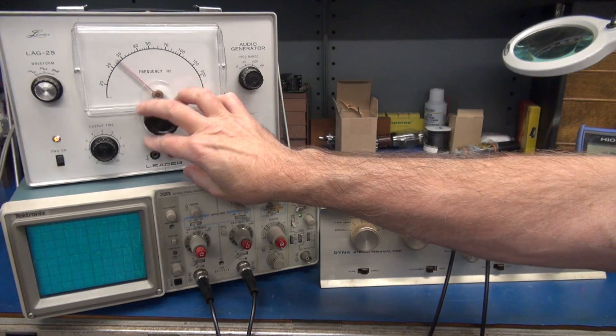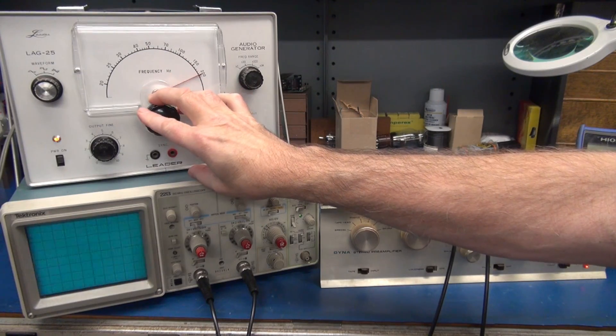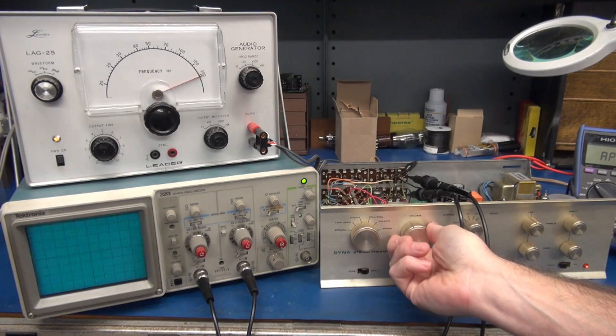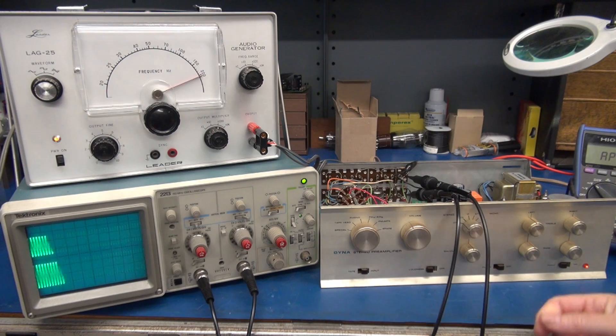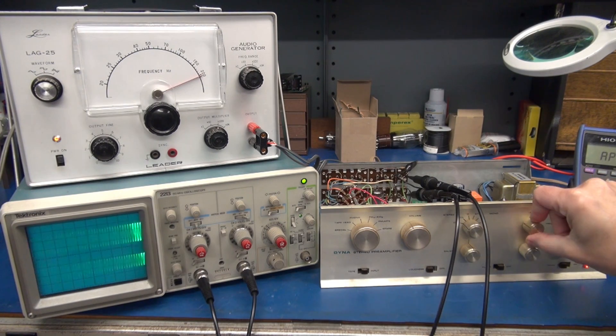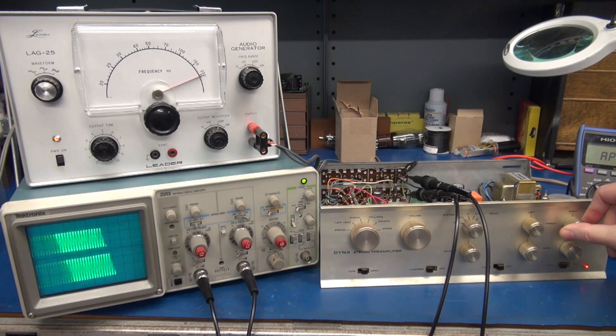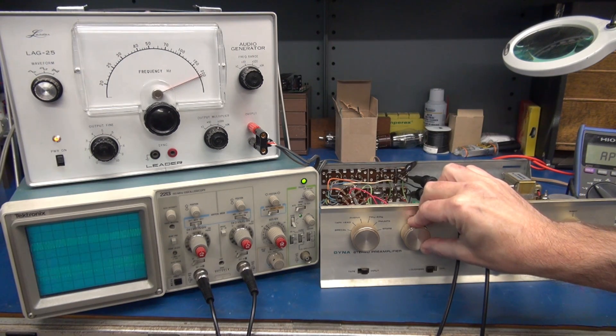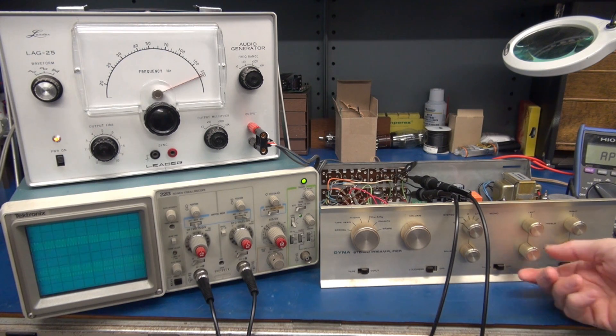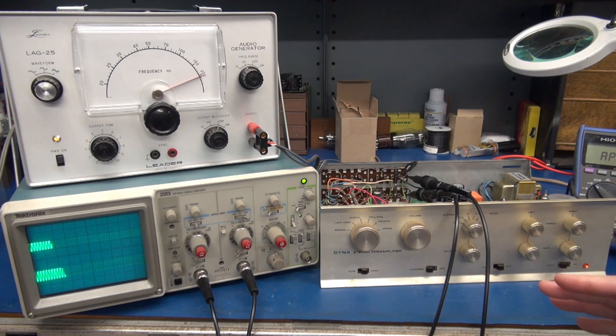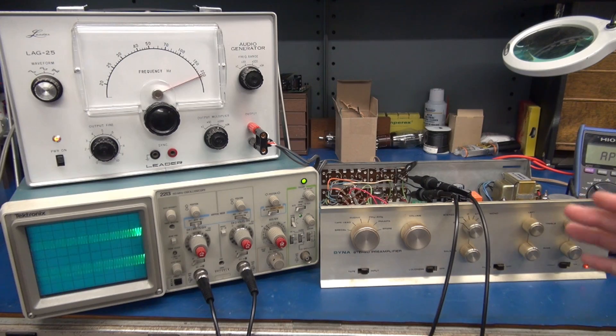Now we're going to increase our frequency to 2 kilohertz. Bring down my volume a little bit. Let's check the treble pots. Everything appears to be working fine. You can repeat that test for all the inputs. I just selected to use the FM.